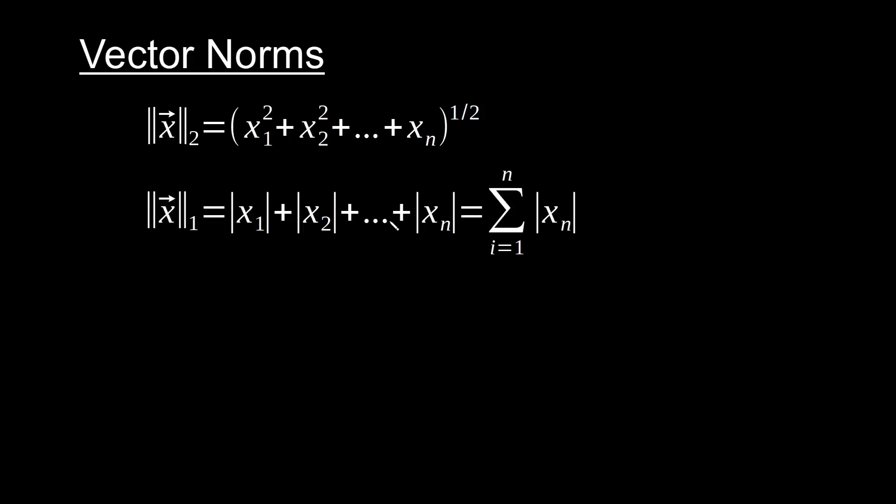For example there is also the 1 norm, otherwise known as the taxi cab norm, where we are taking the sum of the absolute value of each one of the components of our vector. And again this is called the taxi cab norm because of the idea like you're in downtown New York and taxi cabs have to follow things in different components, so you're measuring magnitude by way of components rather than going all the way to the end point of such a vector as you would using Euclidean distance.